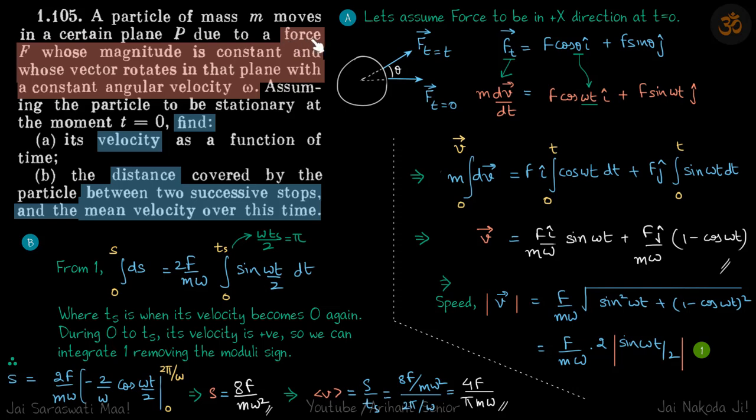A particle is experiencing a force F whose magnitude is constant and its direction is changing with a constant angular velocity omega. We need to find velocity and distance of the particle, so velocity as a function of time and distance between two successive stops and the mean velocity over this time.